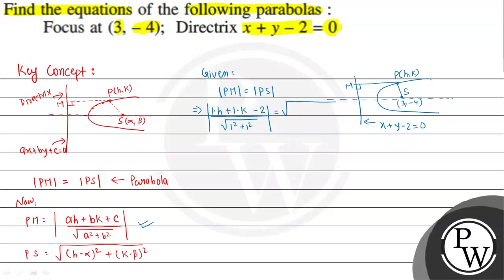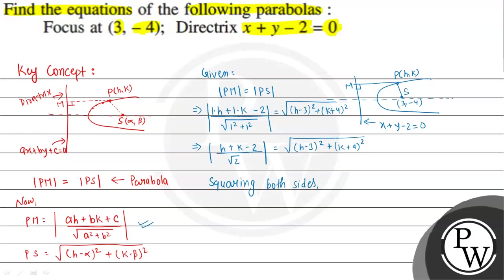So we have (h plus k minus 2) divided by square root of 2 equal to square root of (h minus 3) whole square plus (k plus 4) whole square. Squaring both sides: (h plus k minus 2) whole square divided by 2 equals (h minus 3) whole square plus (k plus 4) whole square.